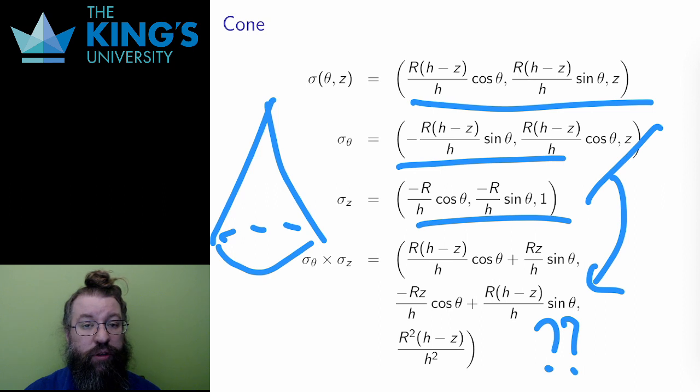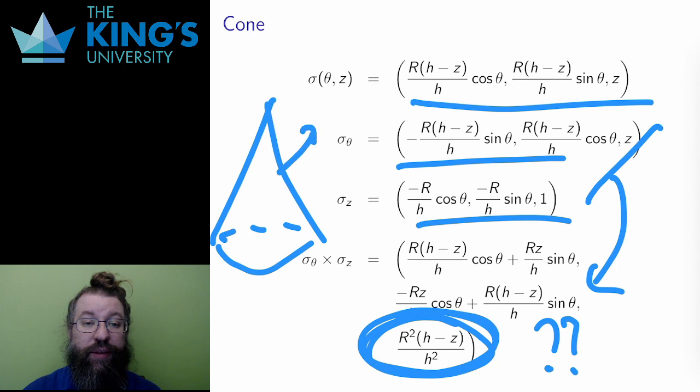But I can notice that, compared to the cylinder, it has a positive z component. And this reflects the fact that the outward direction from the cone should point upwards and not just outwards, because the cone is slanted inwards.